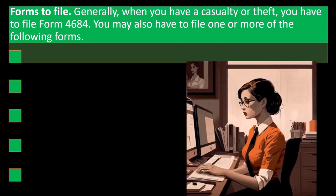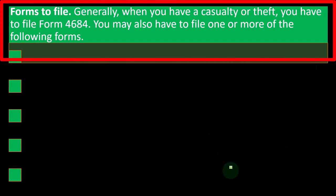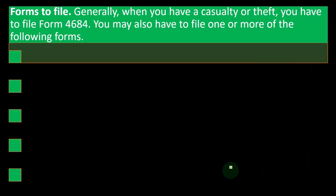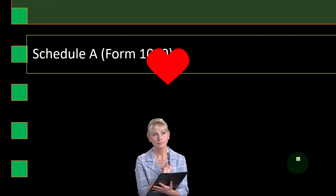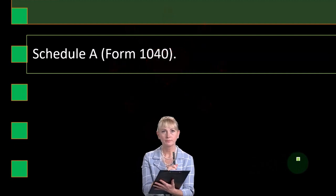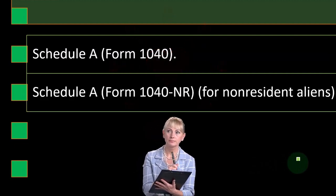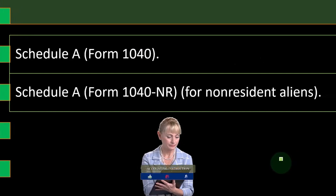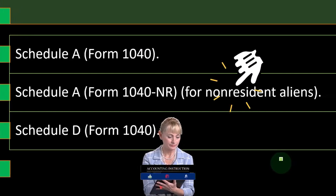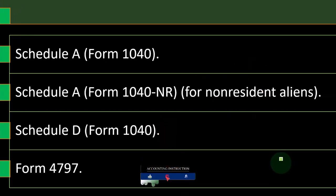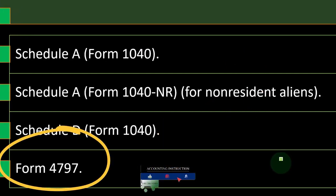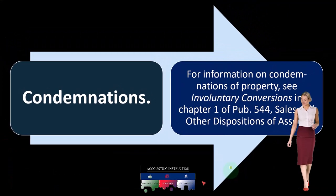Forms to file: generally, when you have a casualty or theft, you have to file Form 4684. You may also have to file one or more of the following forms: Schedule A, Form 1040 — that's where our general focus is here — Schedule A Form 1040NR for non-resident aliens, Schedule D Form 1040, and Form 4797.